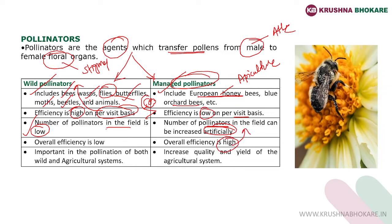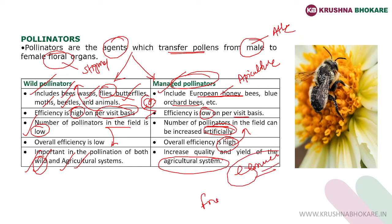The overall efficiency of managed pollinators is high because their population is high, while the overall efficiency of wild pollinators is low because their population is low. Wild pollinators are important in both wild conditions and agricultural systems because they pollinate both types of plants. Managed pollinators are more suitable for the agricultural system, particularly for economically important crops like fruit crops or seed production plots like onion seeds.